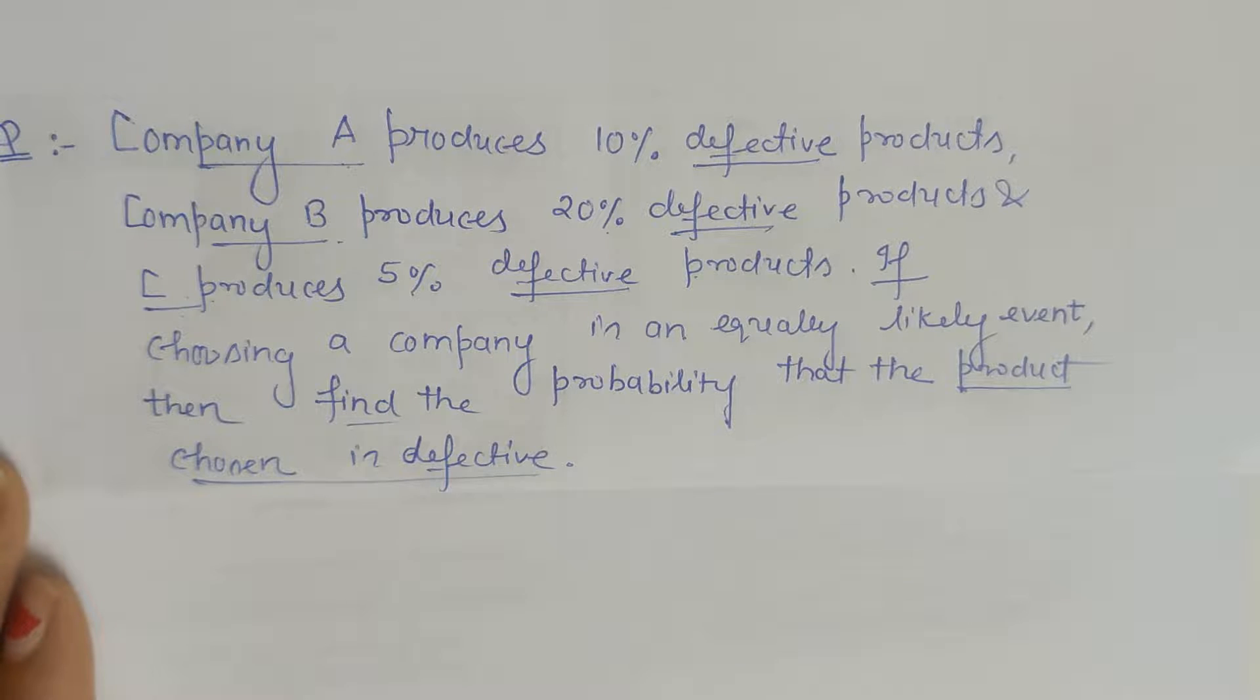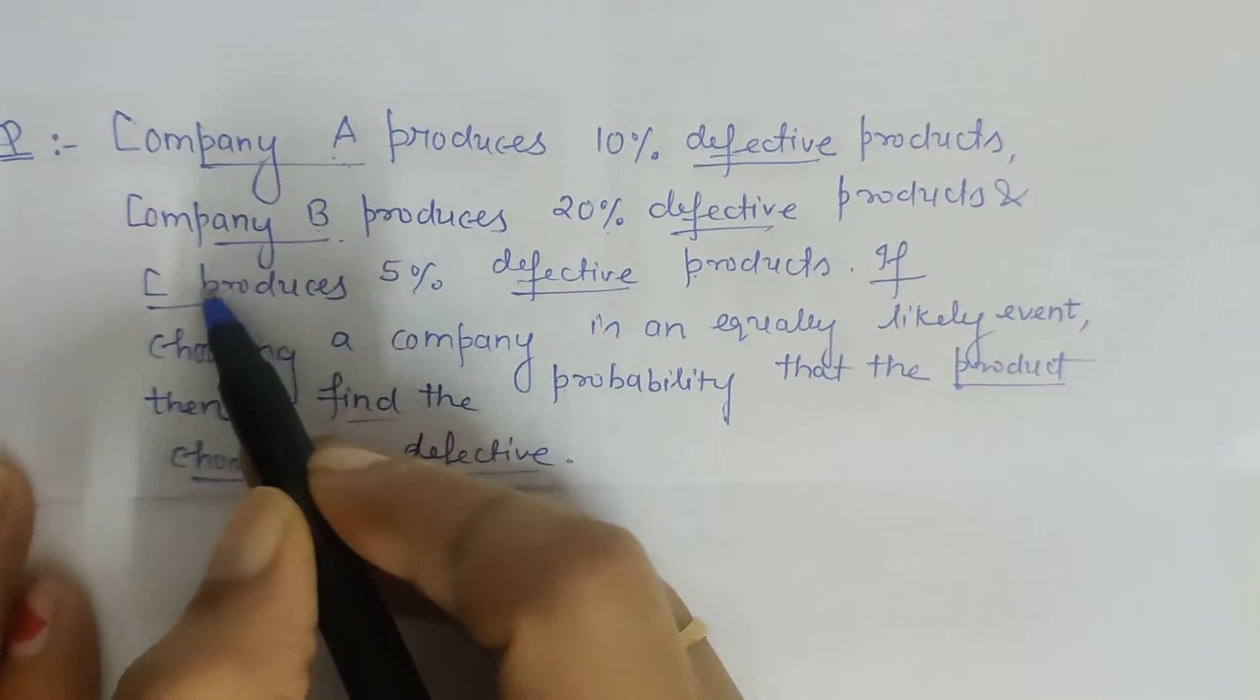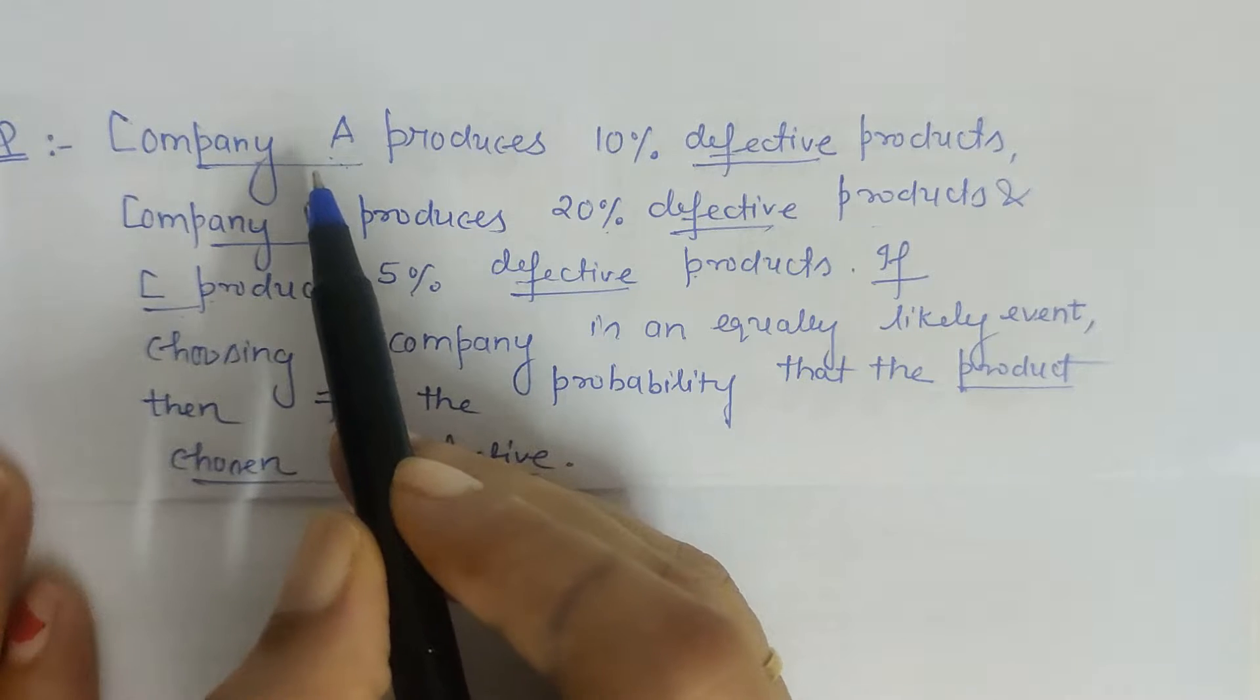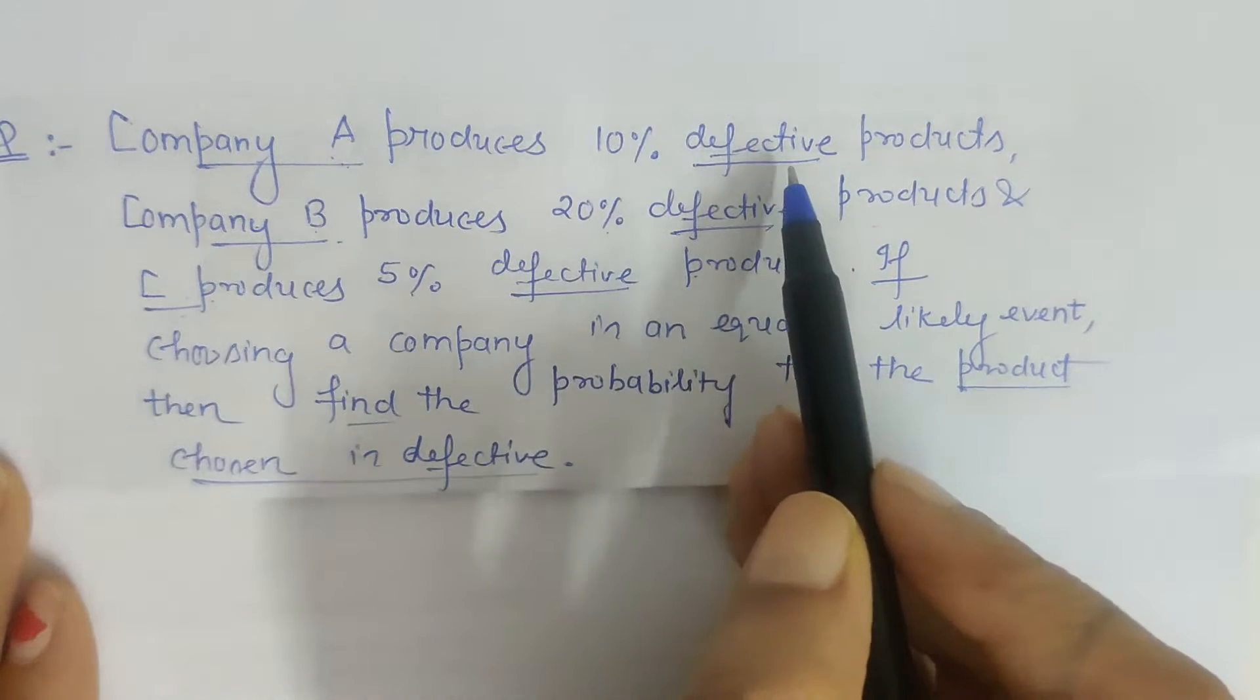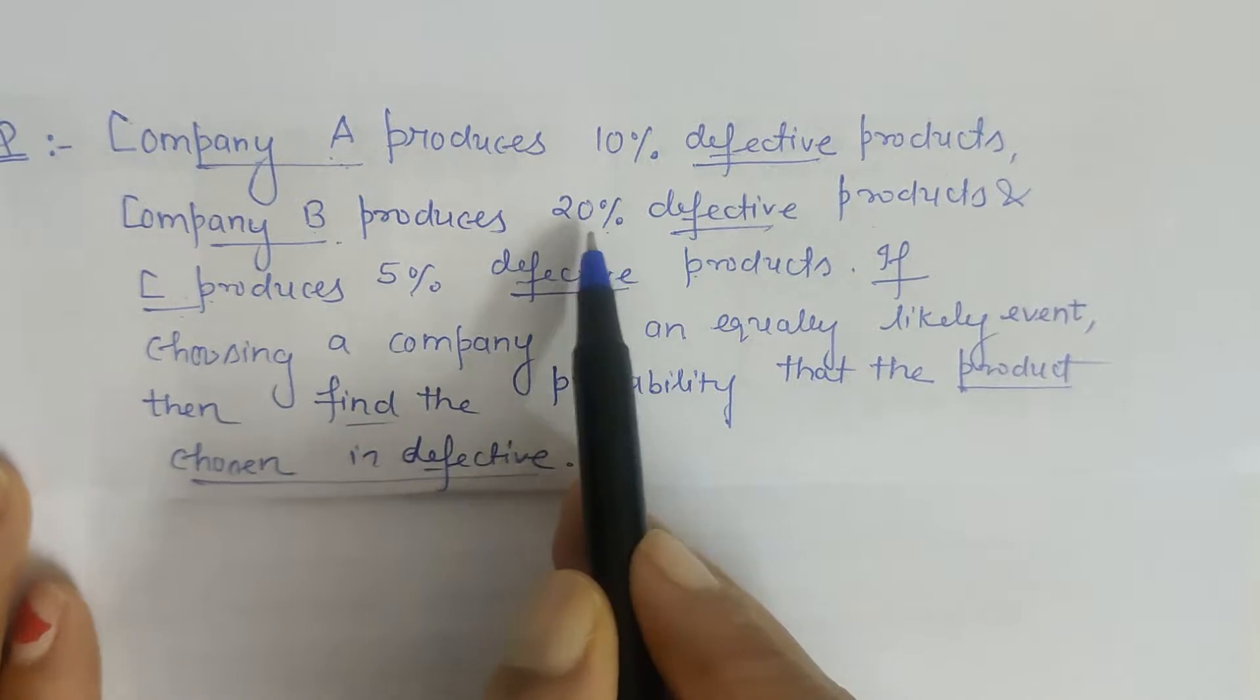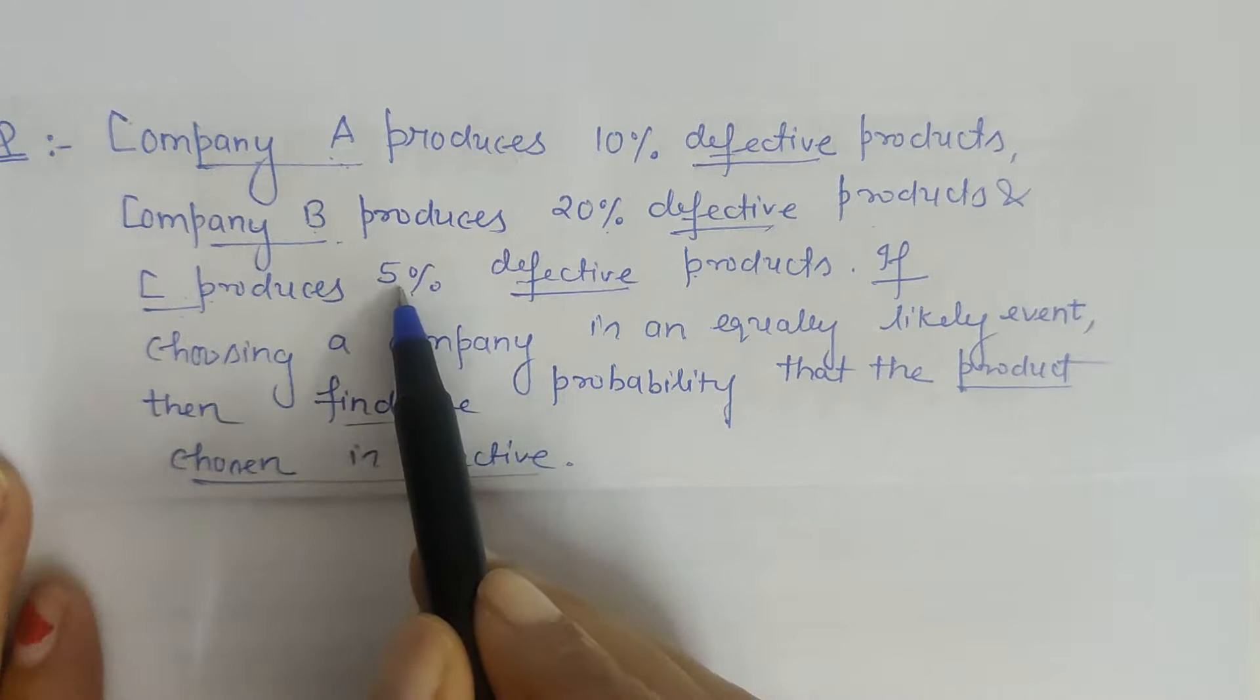Hello friends, in this question we will solve using the theorem of total probability. Here we have company A, company B, and company C which are producing defective products. Company A produces 10% defective products, company B produces 20% defective products, and company C produces 5% defective products.